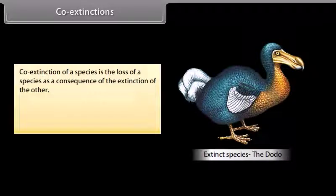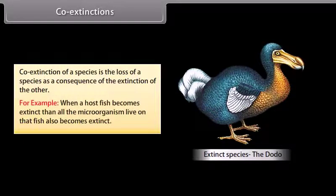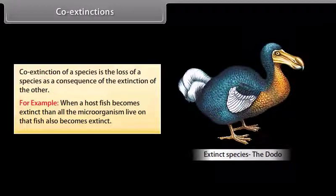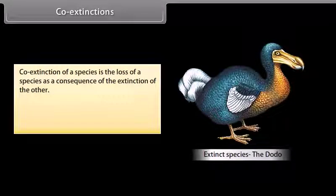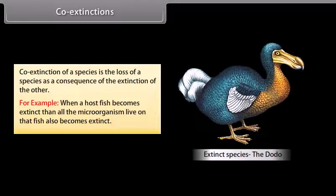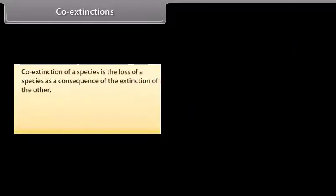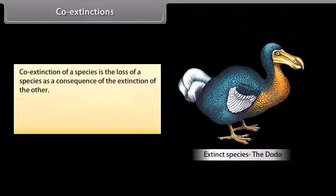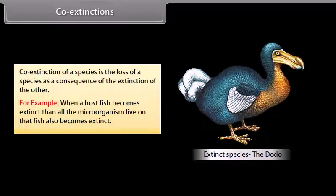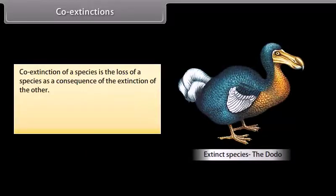Co-extinctions. Co-extinction of a species is the loss of a species as a consequence of the extinction of another. For example, when a host fish becomes extinct, all the microorganisms living on that fish also become extinct.